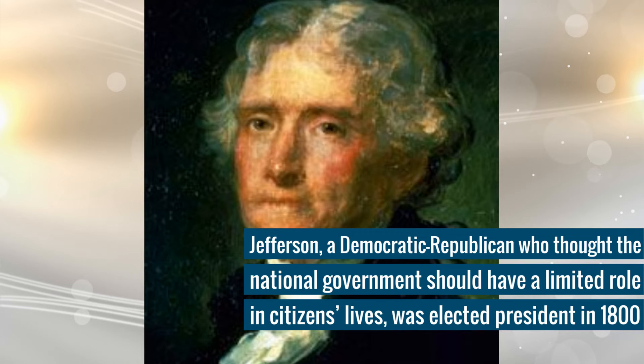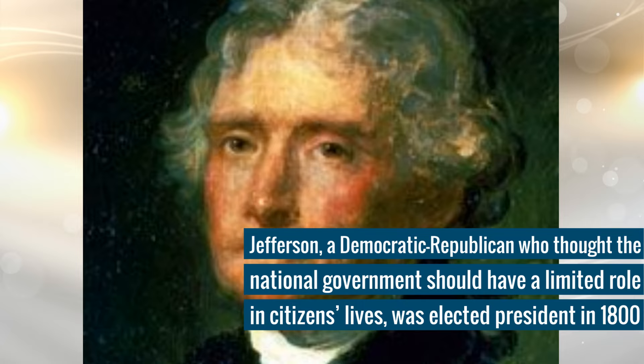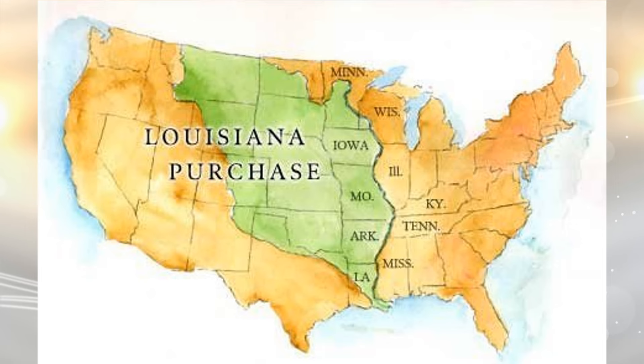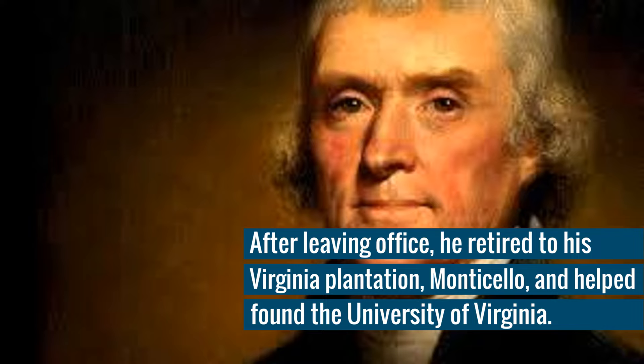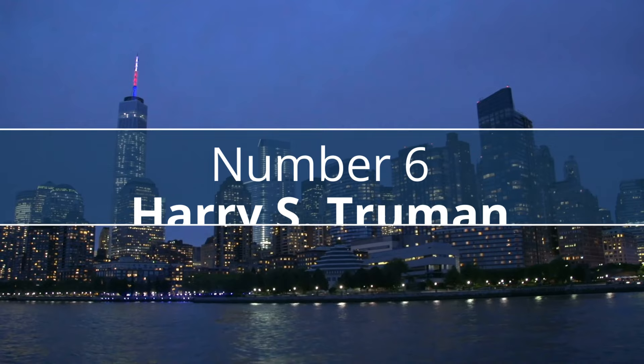Jefferson, a Democratic-Republican who thought the national government should have a limited role in citizens' lives, was elected president in 1800. During his two terms in office, the US purchased the Louisiana Territory and Lewis and Clark explored the vast new acquisition. Although Jefferson promoted individual liberty, he also was a slave owner. After leaving office, he returned to his Virginia plantation, Monticello, and helped found the University of Virginia.